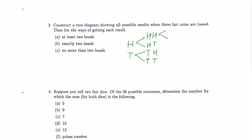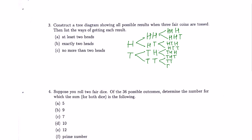For the third coin, we again make two branches from each — adding H and T to each existing outcome. So HH gets H and T, HT gets H and T, TH gets H and T, and TT gets H and T.